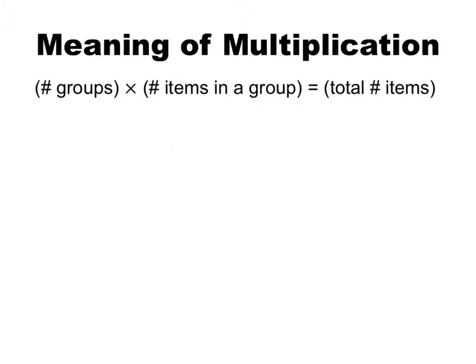The second definition is the meaning of multiplication. Multiplication deals with situations where we have a number of groups. We take that times a number of items in each group, and that gives us a total number of items. We're going to use both this definition of a fraction and the meaning of multiplication a lot in this section.